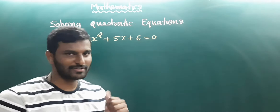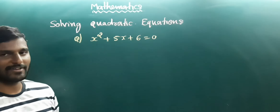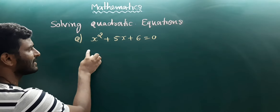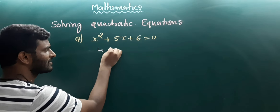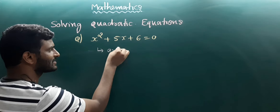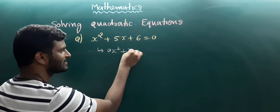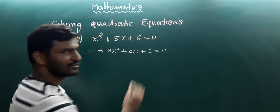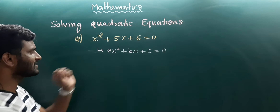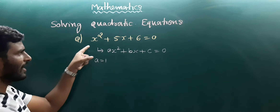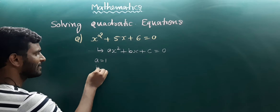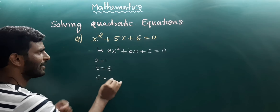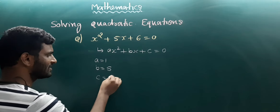Which are the 2 solutions of this equation? It is very easy. Let us take the standard equation of the quadratic equation, that is ax squared plus bx plus c equals 0. So what is the a value? The a value is 1, the b value is 5, and the c value is 6.